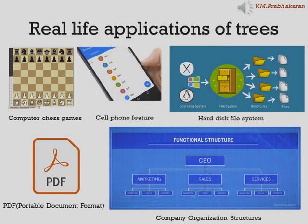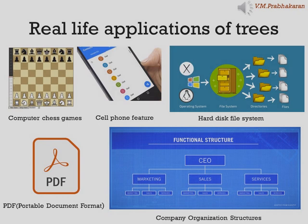Looking at the cell phone feature: when your contacts get listed as you start typing a name, the tree structure is involved. In the hard disk file system, the C drive has many folders, each folder can in turn have many folders, and so on. Each folder is a non-leaf node and files are the leaf nodes — this forms a tree data structure. The fourth real-time example is PDF (portable document format): PDF is a tree-based format. It has a root node followed by a catalog node — these are often the same — followed by page nodes, which have several child page nodes.